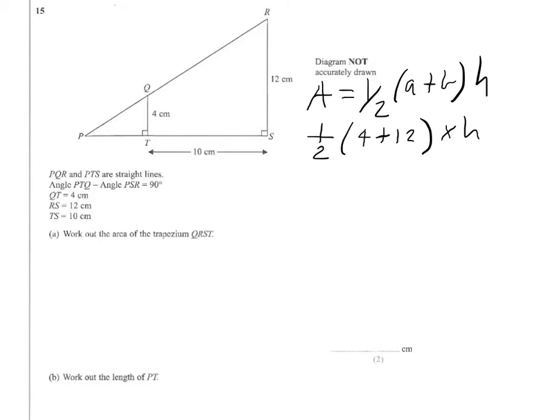And 4 plus 12 is 16, and half of 16. So that's 1/2 times 16 times 10. So it's 8 times 10, which is 80. So the area is 80 centimeters squared.